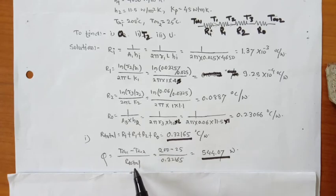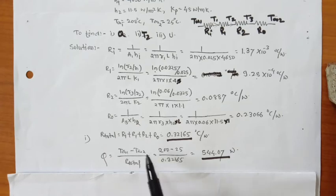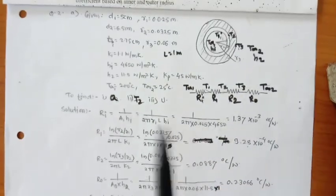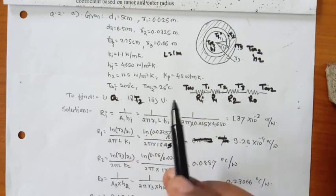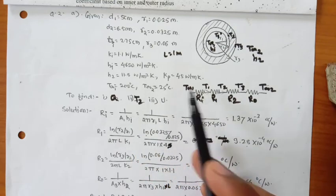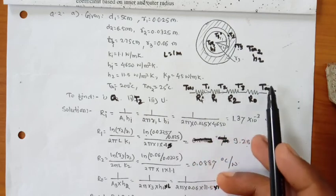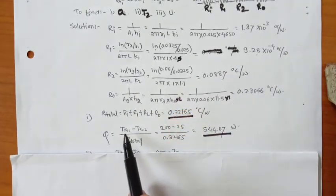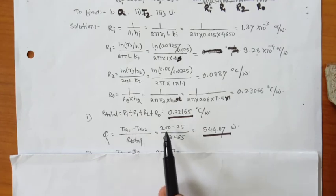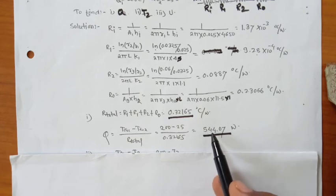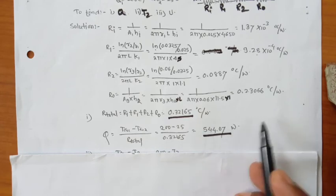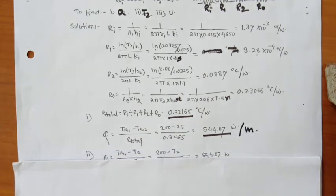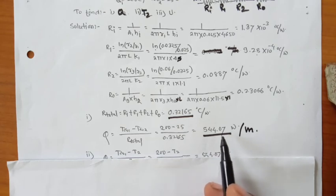Q = (T∞1 − T∞2) / R_total. We use T∞1 and T∞2 because these are the end temperatures spanning all thermal resistances. Substituting: Q = (200 − 25) / 0.32165 = 544.07 watt. This is the heat loss per meter length of the pipe — our first answer.